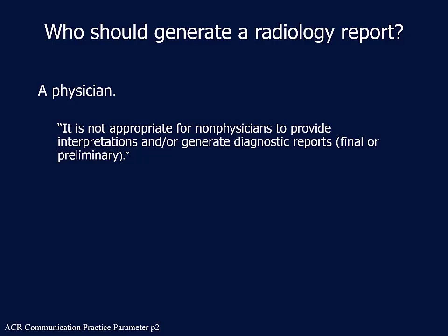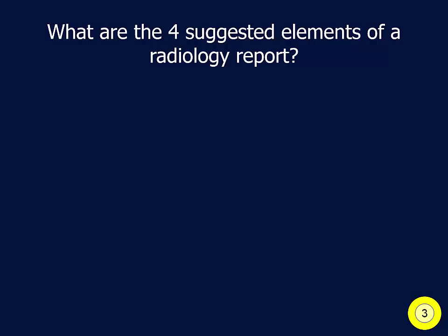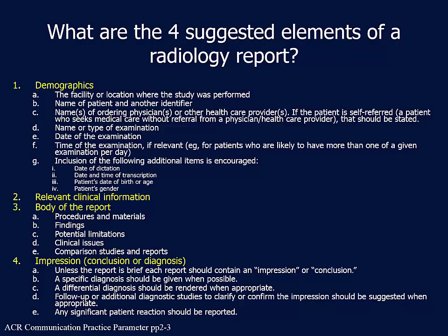Next question: what are the four suggested elements of a radiology report? Those four elements are: demographics, relevant clinical information, body of the report, and impression — or conclusion or diagnosis. Demographic information should be included, though it doesn't necessarily have to be in the report itself; it could be in the metadata associated with the report, but it should be documented somewhere in the medical record. The body of the report should discuss procedures, materials, findings, potential limitations, clinical issues, and comparisons. The impression should be brief, and every report should contain an impression or conclusion unless it's very brief. It should give specific diagnoses when possible, differential when appropriate, follow-ups if needed, and any significant patient reaction should also be reported.